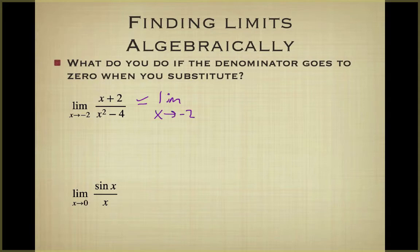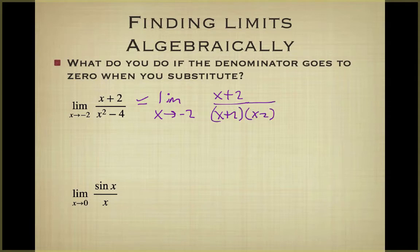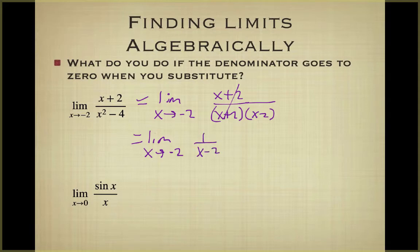So we have the limit as x approaches negative 2 of (x+2) over (x+2)(x−2). From here we can cancel the (x+2) factors, and now we have the limit as x approaches negative 2 of 1 over (x−2). Now we can substitute negative 2 in: this is 1 over (negative 2 minus 2), which becomes negative 1/4.